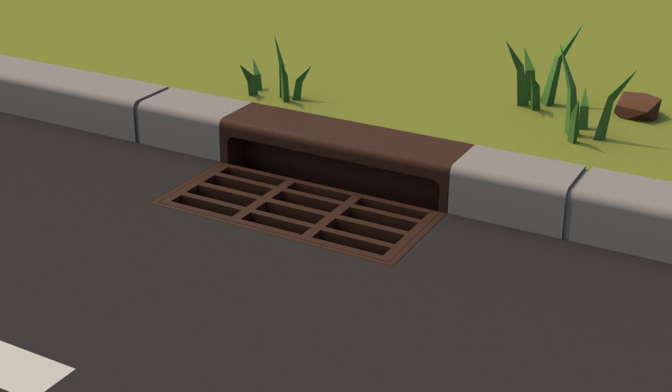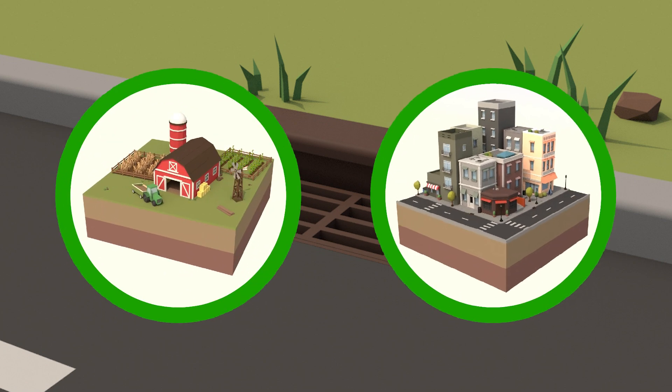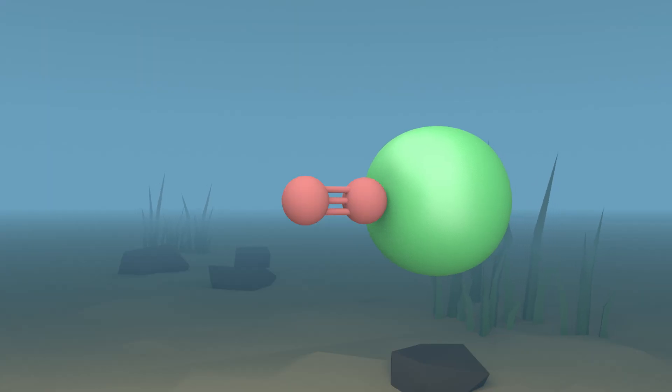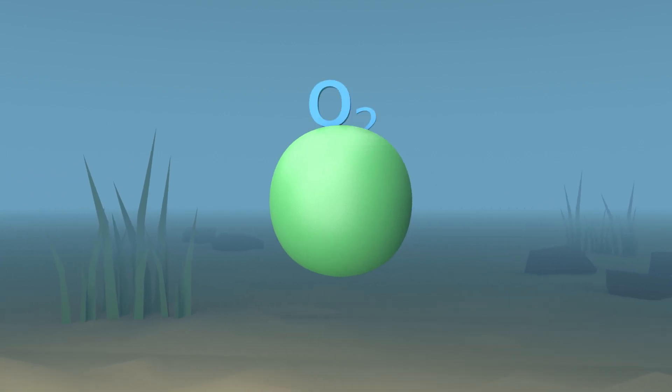This imbalance can occur when runoff from farms or urban environments enters the water stream. In a balanced system, nutrient-hungry algae regulate these chemicals by consuming them and producing oxygen as a byproduct.